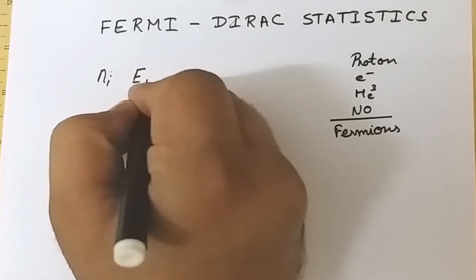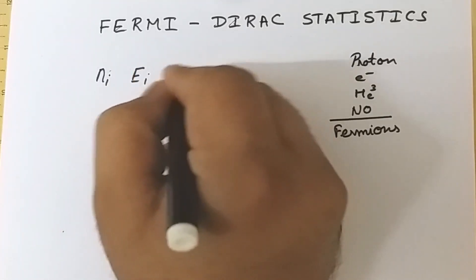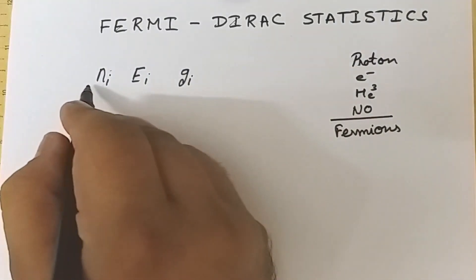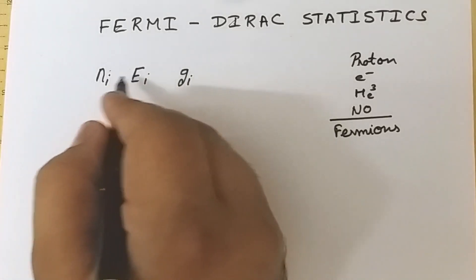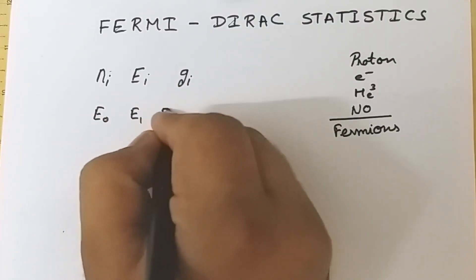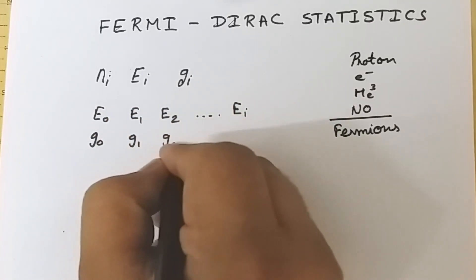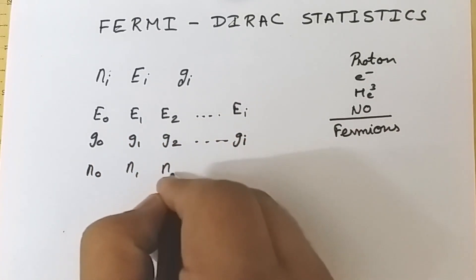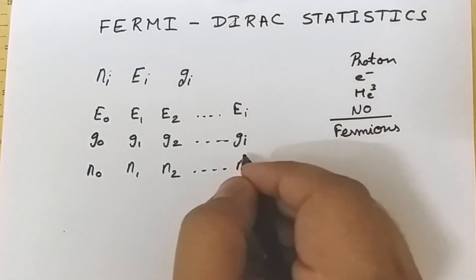Suppose we consider Ni number of particles to be filled in the Ei energy level whose degeneracy is Gi — meaning each Ei energy level has Gi states. Particles are indistinguishable and occupy only a single energy state. We have energy levels E0, E1, E2 up to Ei with states G0, G1, G2 up to Gi, and particles N0, N1 up to Ni occupying those levels.